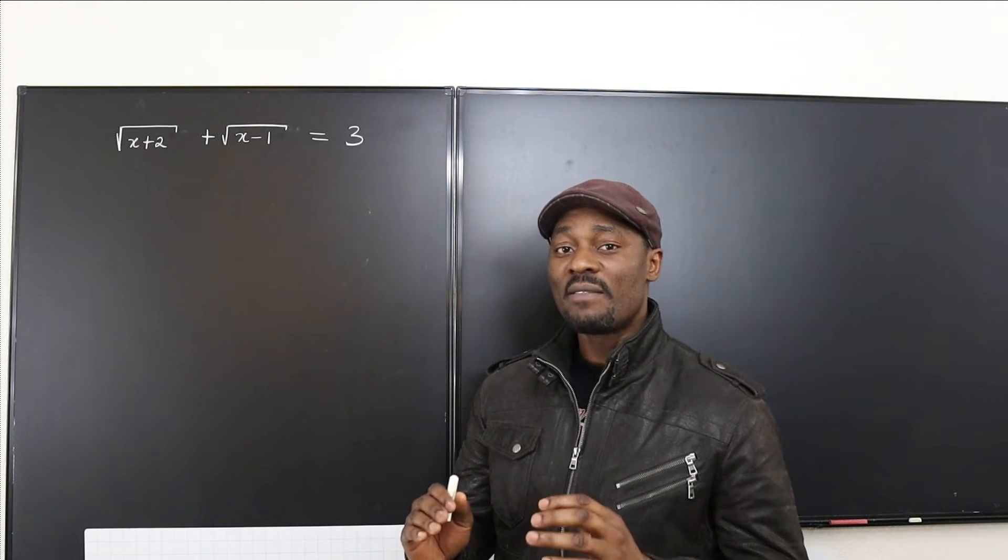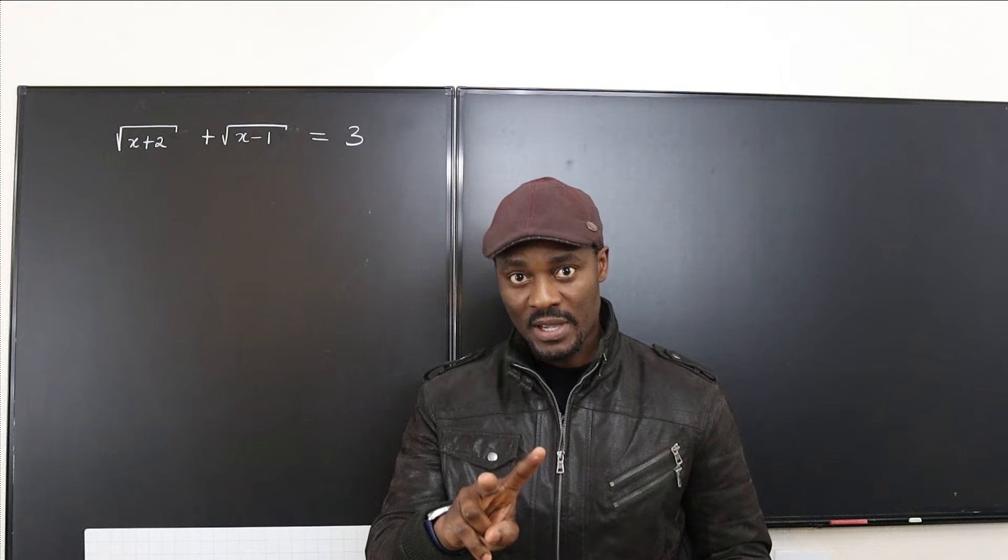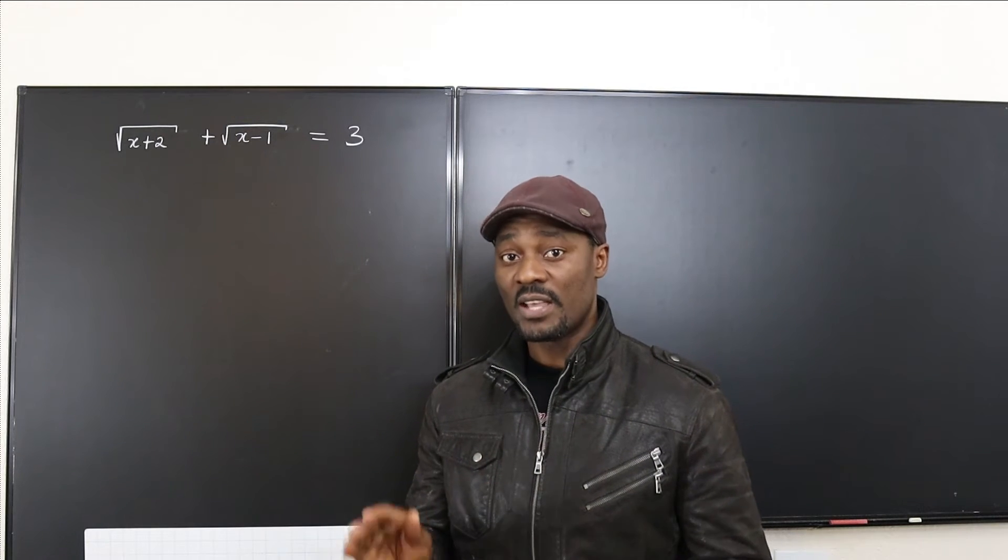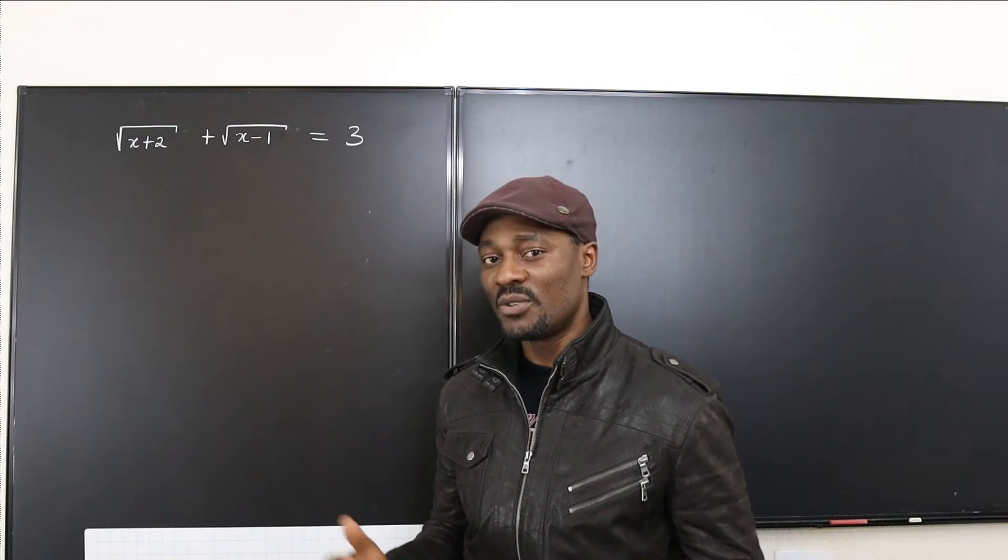So whenever you have a radical equation and you have two of them, I recommend strongly that you separate them. Move one of them to the other side. It makes your work faster and easier and you're less likely to make mistakes.